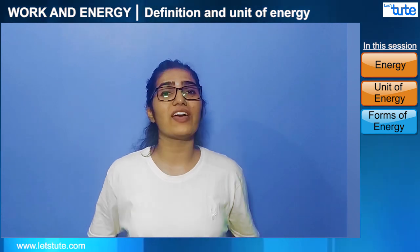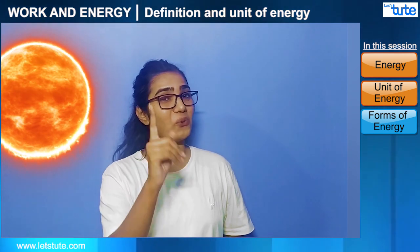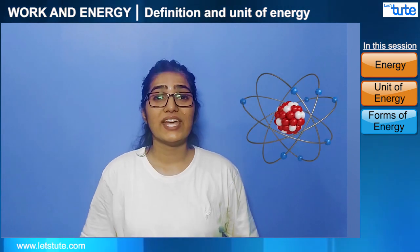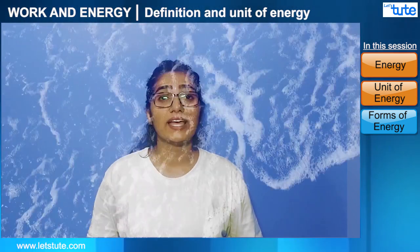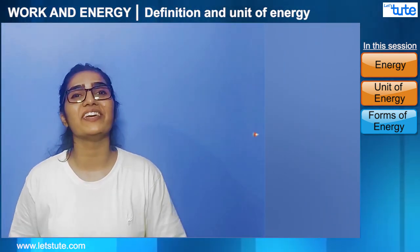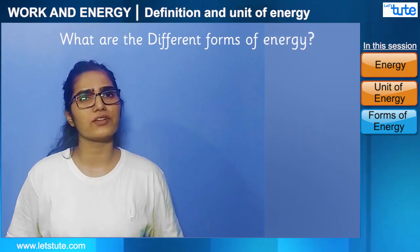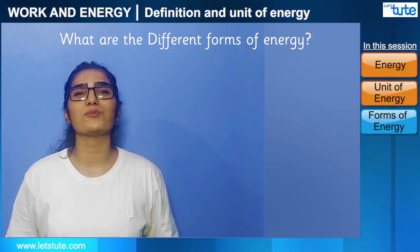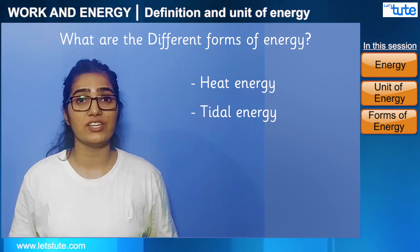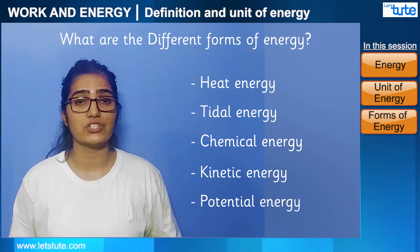The biggest source of energy for us is the sun, but that's not the only source. Energy can also be obtained from atoms, from tides, and even from the interior of the earth. The different forms of energy include heat energy, tidal energy, chemical energy, kinetic energy, and potential energy.